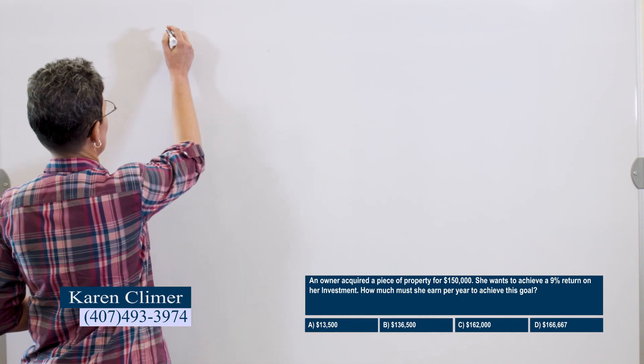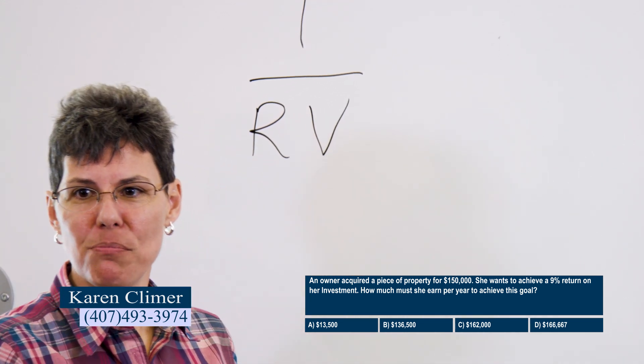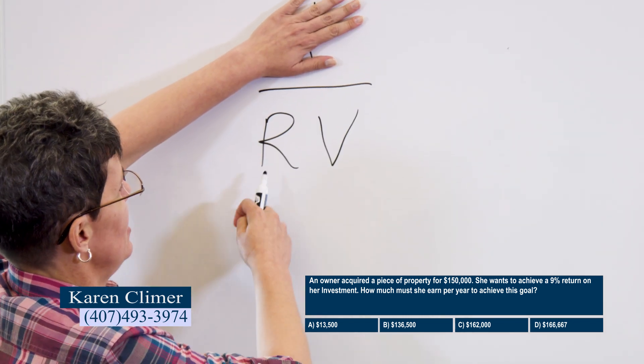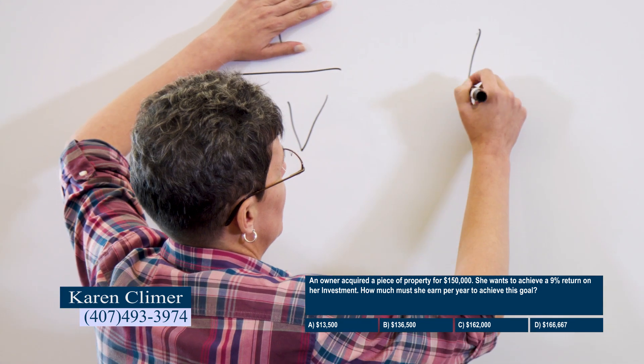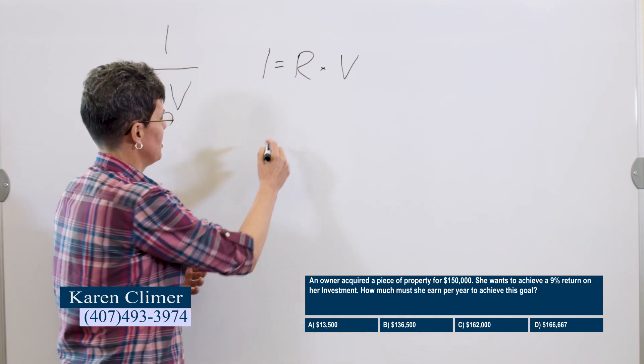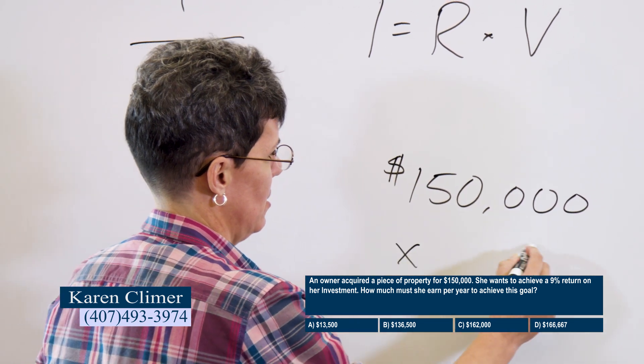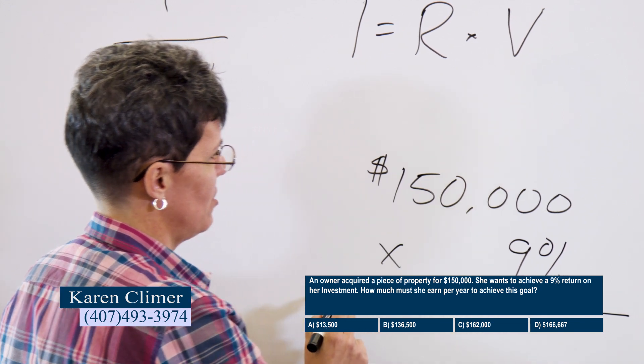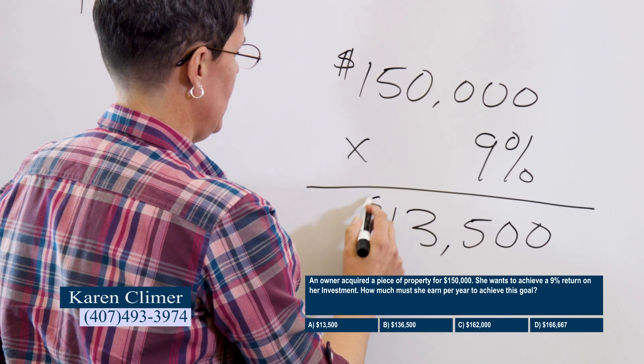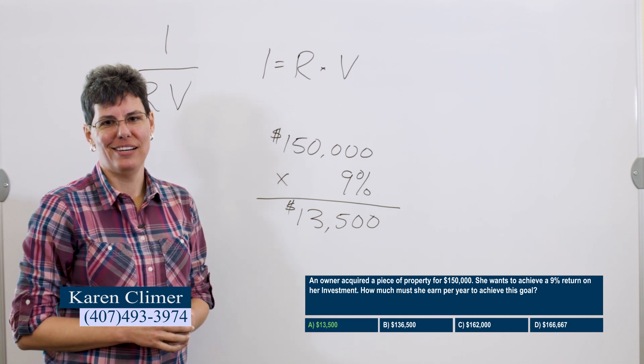Just like before, we're going to start with I over RV. In this case, it's how much must she earn per year, so we're looking for income. So you cover that up. That's the formula, R times V. The value is given in the question and the rate is also given in the question. So you just plug that in your calculator, 150,000 times 9% and you get 13,500. So this person needs to make 13,500 per year, which in this case is A.